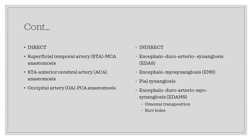For indirect techniques, we have EDAS — encephalo-duro-arterio-synangiosis — which involves moving the superficial temporal artery and attaching it to the dura. EMS involves taking the temporal muscle and placing it on the surface of the brain. Pial synangiosis places the pia in close proximity to the dura to increase the superficial area for vascular contact. EDAMS is a combination of muscle and an extracranial artery with the dura. There is also literature on burr holes to promote neo-angiogenesis.